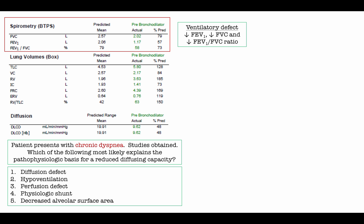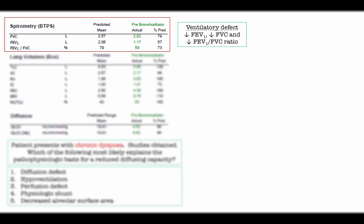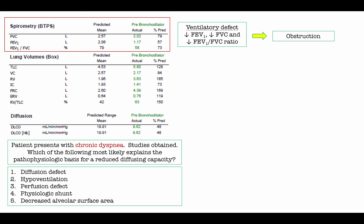On the boards, they generally tell you FEV1, FVC, and the ratio. Included here are actual PFTs where the normal value is listed as predicted mean, accounting for the patient's age, height, and gender, along with percent of predicted achieved. The FEV1 is 57% of predicted and the forced vital capacity is 79% of predicted. That ratio tells us FEV1 is reduced in proportion to forced vital capacity, so this spirometry is consistent with airway obstruction.